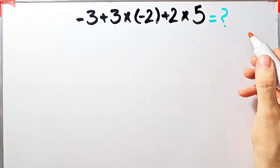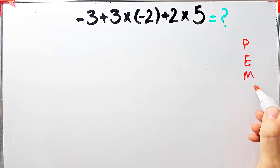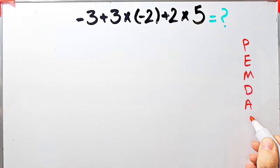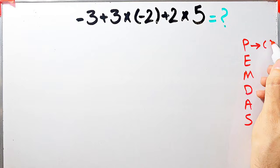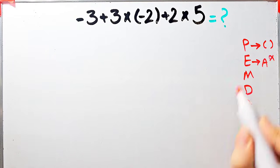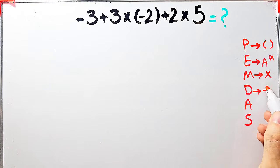Let's solve this question step by step. To solve it we need to follow the order of operations, which is PEMDAS. PEMDAS shows the priority of mathematical operations. If you don't follow this rule you get the wrong answer. P stands for parentheses, E stands for exponent, M stands for multiplication.